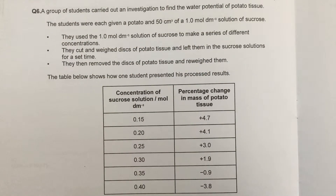Here we have a very common biology question and a very common biology practical — it is the practical you'll do for required practical three as part of your A-level. We can work with potato tissue, apple, or carrot. The whole point of the experiment is to find the water potential of the cytoplasm inside that plant tissue. We take either cylinders or discs and soak them in different concentrations of sucrose or salt solution.